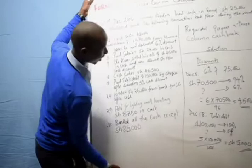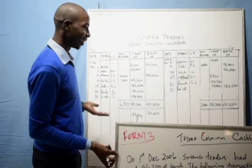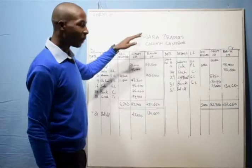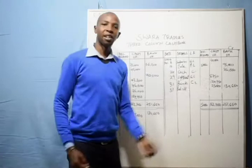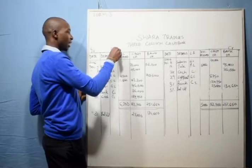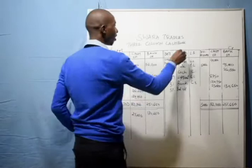Here is the 3-column cash book. As you can see, we must have a heading: Swara Traders — 3 Column Cash Book. On this side we have debit, and on the other side we have credit. Everything on the debit side is a receipt, and everything on the credit side is called payment.